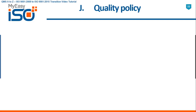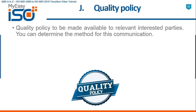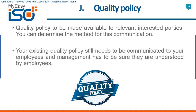J — Quality Policy. Quality policy is to be made available to relevant interested parties. Your existing quality policy still needs to be communicated to your employees, and management has to be sure it is understood by employees. You need to make the quality policy also available to relevant interested parties. You can determine the method for this communication.